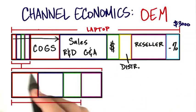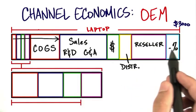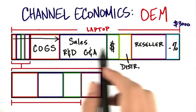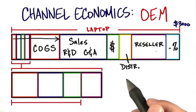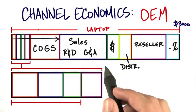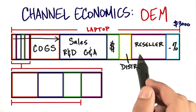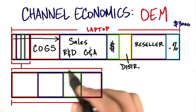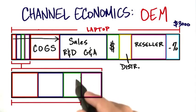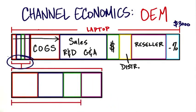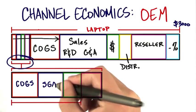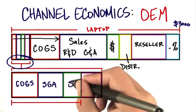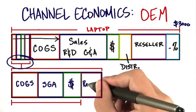So where do you fit? This is just a laptop manufacturer — assume this is Apple or HP. But in this case, you were a graphics chip supplier to Apple or HP, and you were just one single component on their motherboard. If you really think about it, you are fitting in here in their cost of goods. And now your cost of goods, your sales, general and administrative costs, your profit, and your reseller costs all stack up within that.